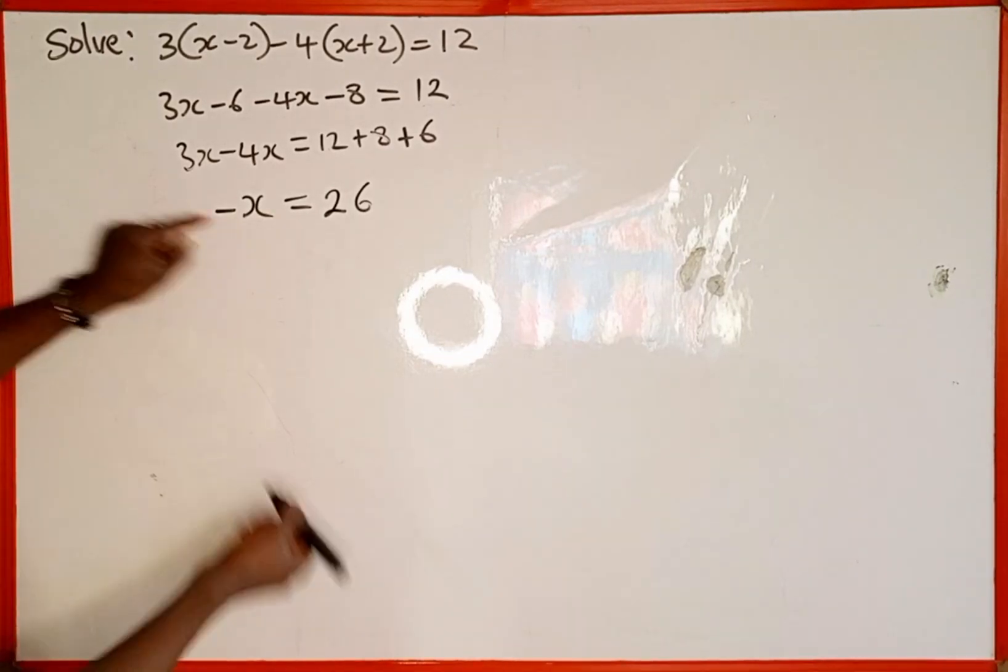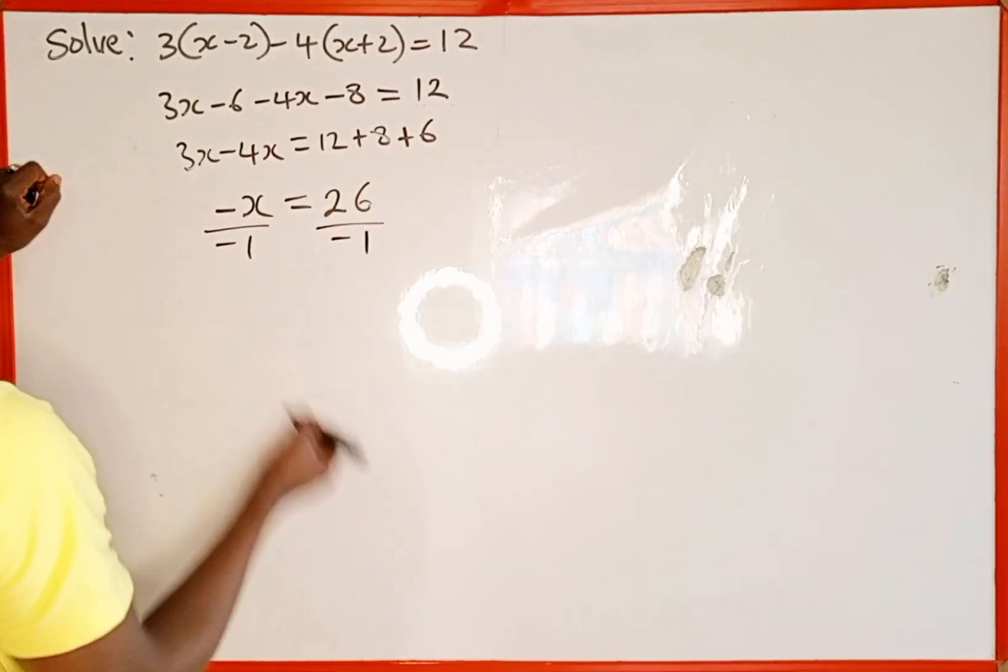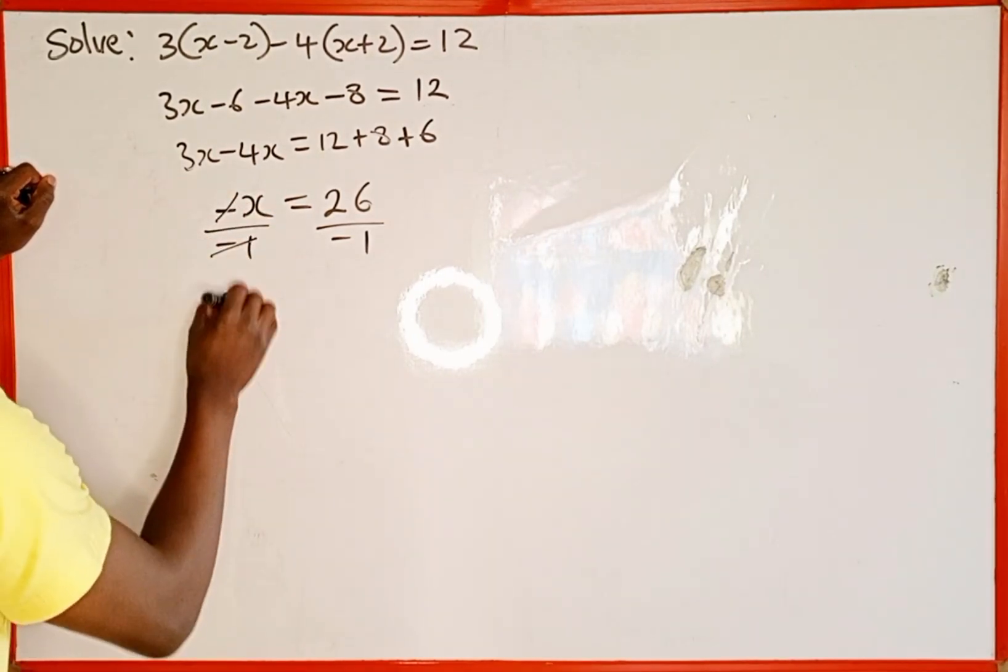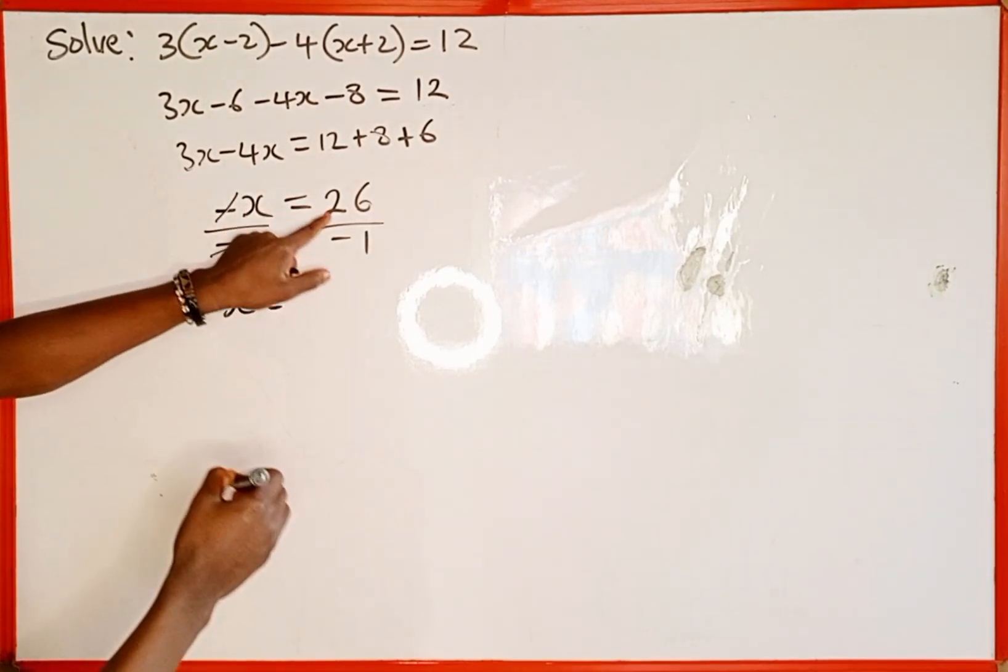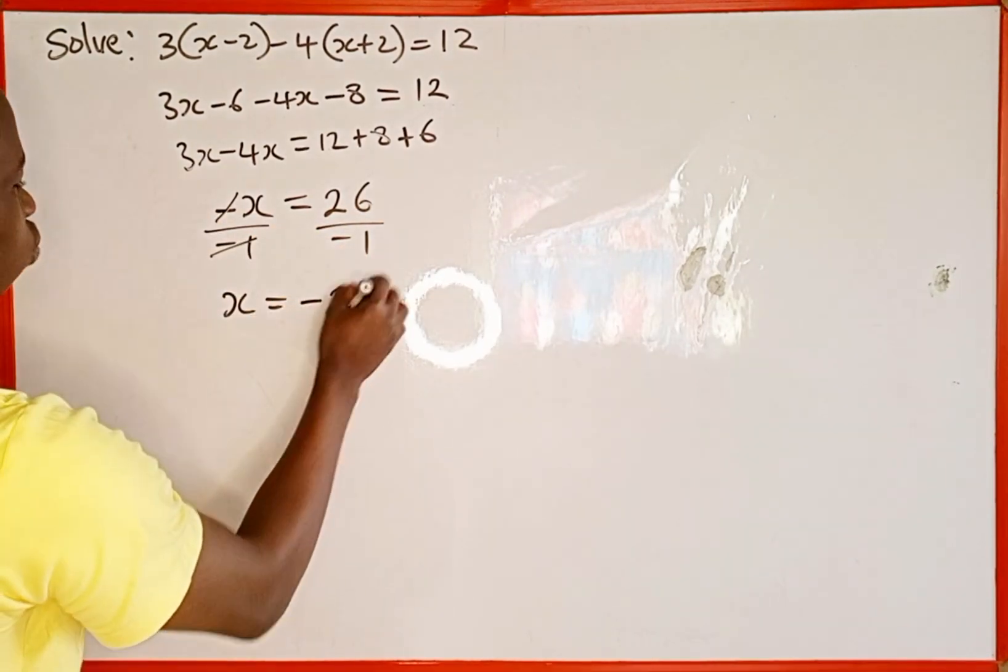Now to get the value of x we are going to divide both sides by minus 1. This minus is going to cancel this minus. x now will be equal to 26 divided by minus 1 which is minus 26.